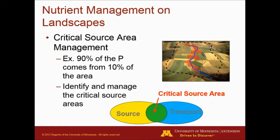It is critical that we follow those setbacks for sensitive features. Some studies have shown that up to 90 percent of the phosphorus comes from about 10 percent of the land. We need to identify those critical areas—that's why we have setbacks for different critical source areas where we are either not allowed to apply manure at all, or we are allowed to apply but need to incorporate to reduce the potential for runoff. We can really reduce environmental problems if we just follow the setbacks implemented by the pollution control agency.